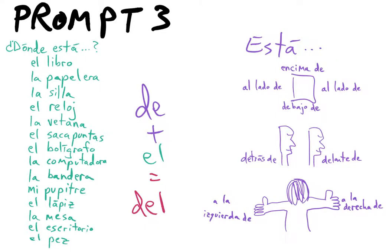In Prompt 3, you'll be asking and answering where things in the classroom are located. To ask where something is, you say, 'Where is the...?' For example, 'book?' In Spanish: ¿Dónde está el libro?